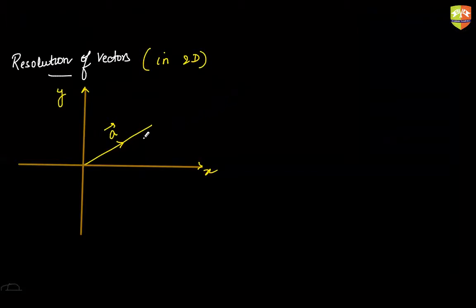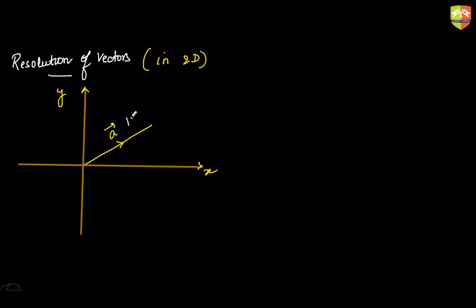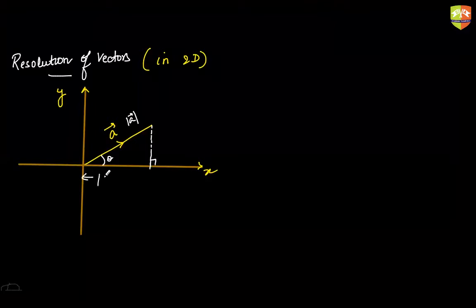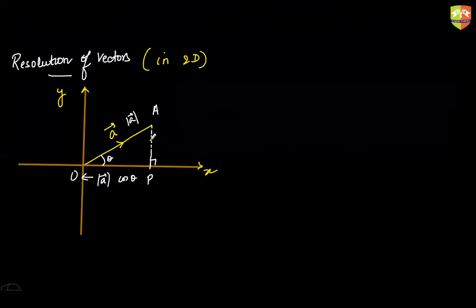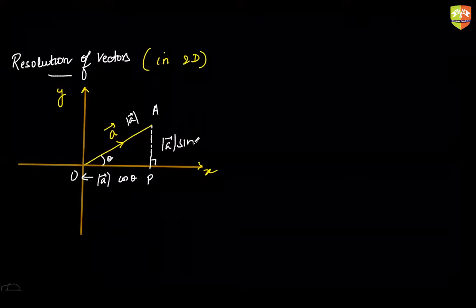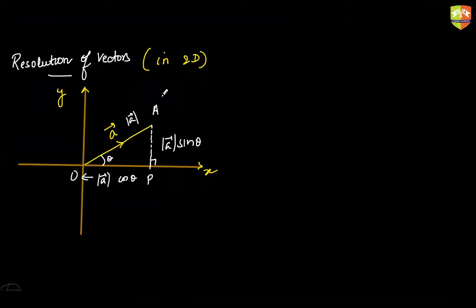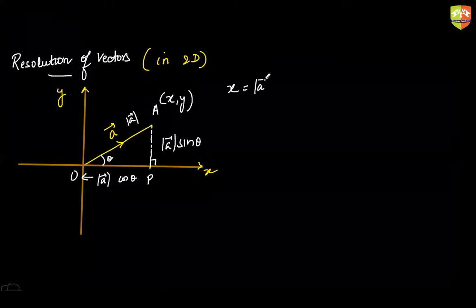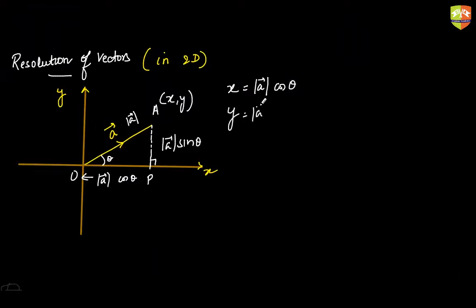How do we resolve it? Let's say the magnitude of this vector is |a| and this angle is theta. If I drop a perpendicular from here, this length would be |a| cos θ. Let me name it as O, A, P — so OP length will be |a| cos θ and AP length will be |a| sin θ. We know that if the coordinates of A are (x, y), then x = |a| cos θ and y = |a| sin θ.